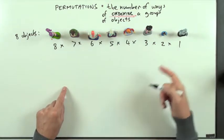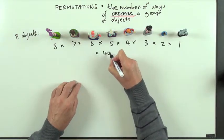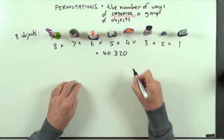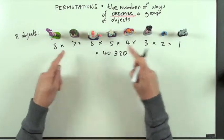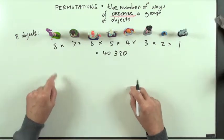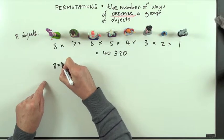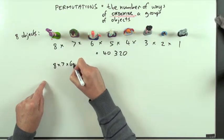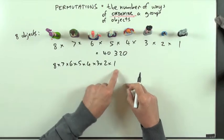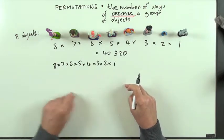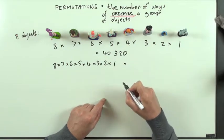If you multiply all of that out, that would come to 40,320. There are 40,320 ways of arranging these eight objects. Now, this calculation is quite lengthy to write out — eight times seven times six times five times four times three times two times one takes up quite a lot of space and time.